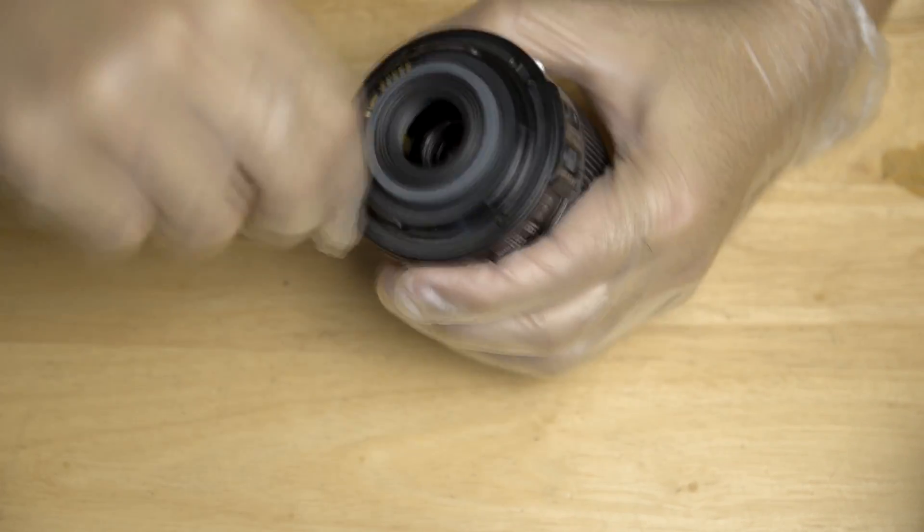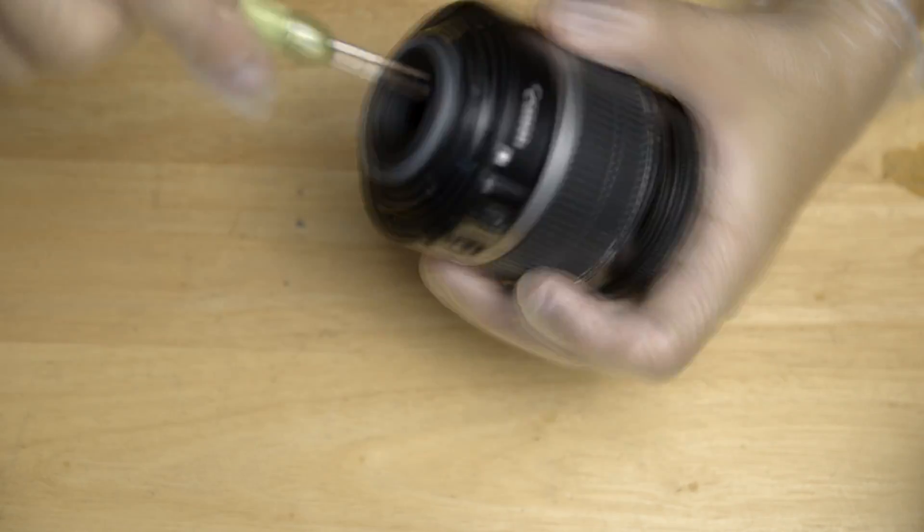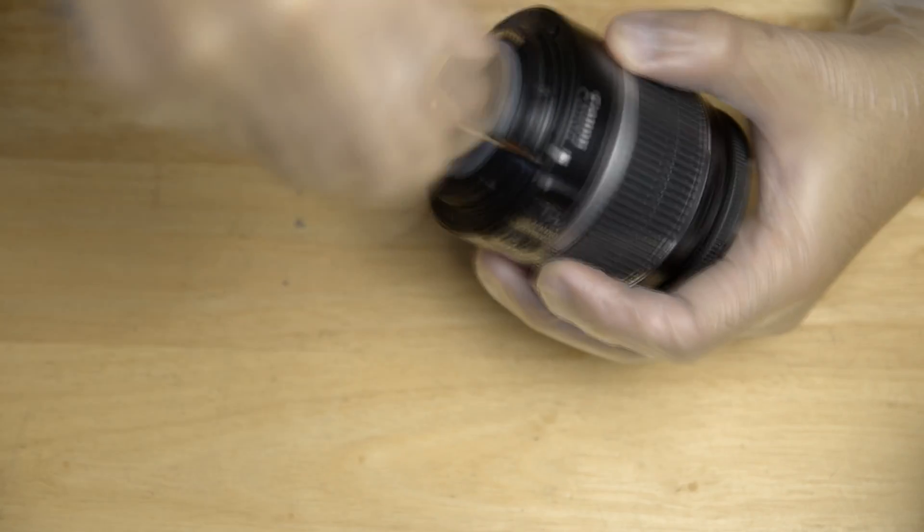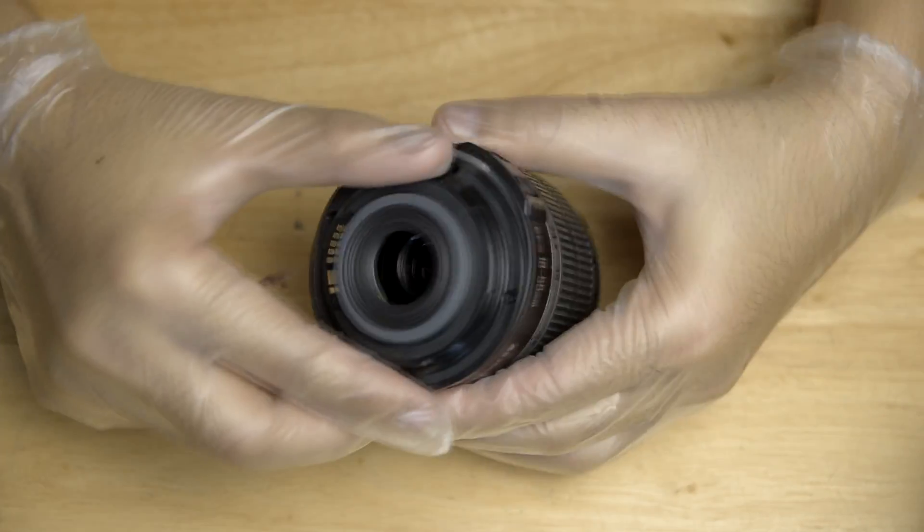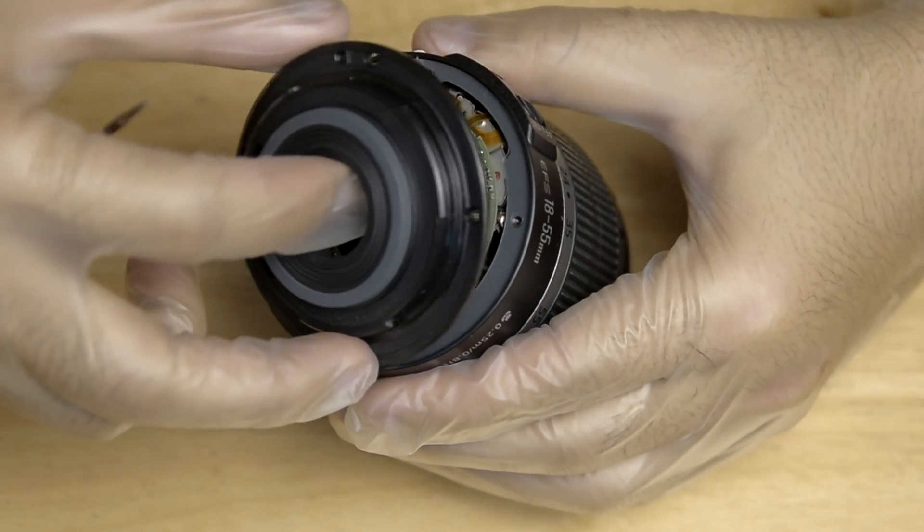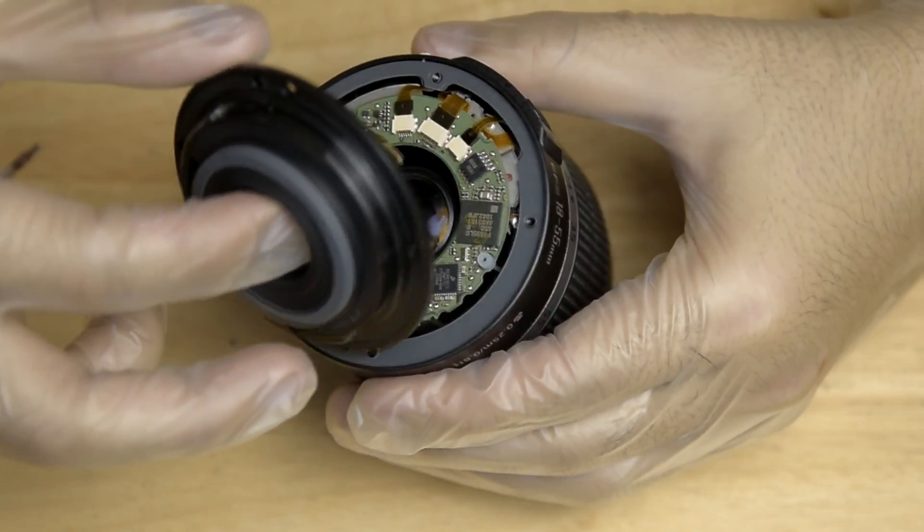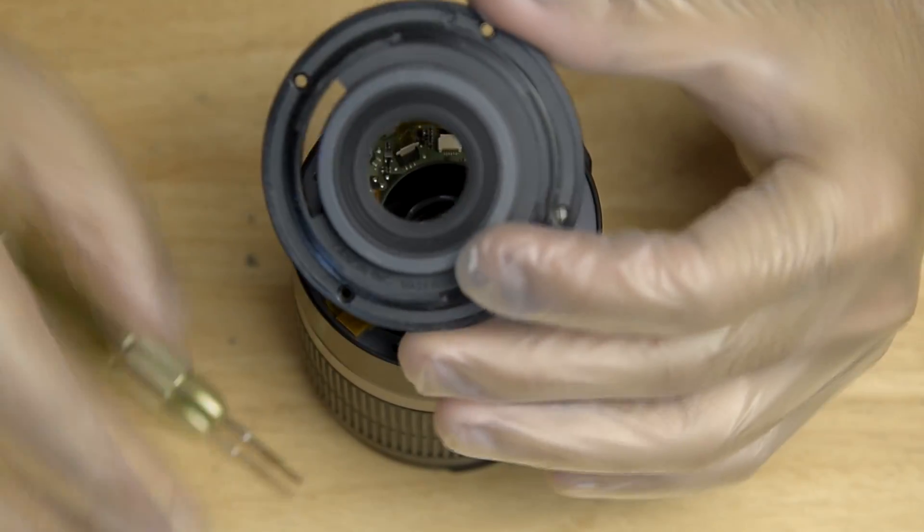As you can see here, I am now removing the four screws. Okay, when you remove the cover, make sure that you don't pull it out completely. There is one flex cable connected to the board, so you have to remove it first.